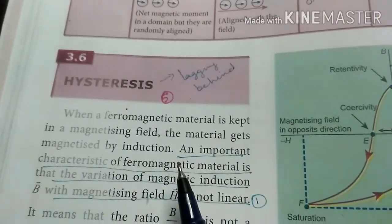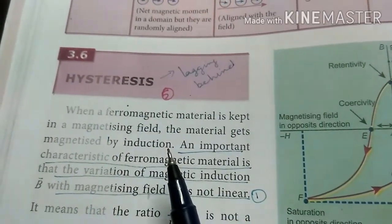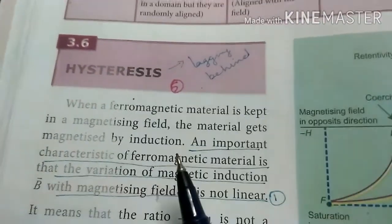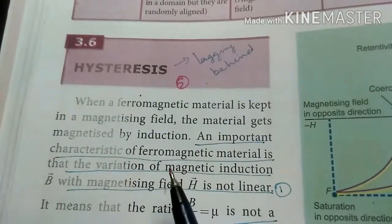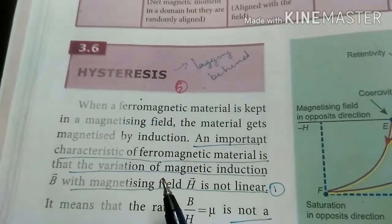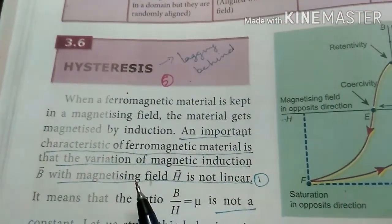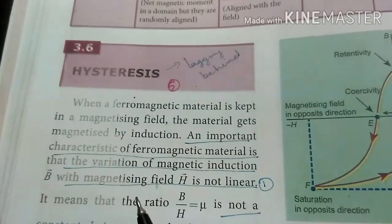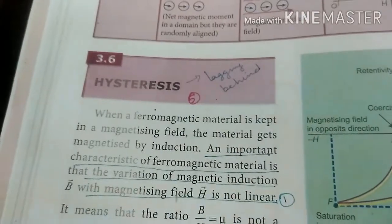When a ferromagnetic material is kept in a magnetizing field, the material is magnetized by induction. The variation of magnetic induction with magnetizing field is not linear.